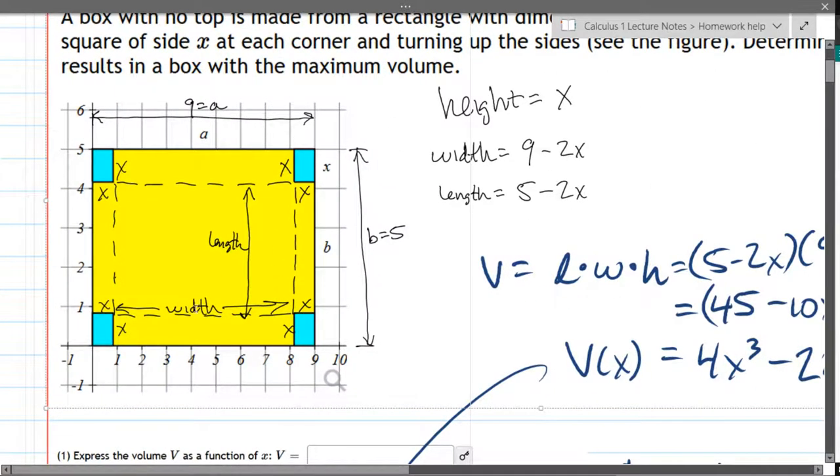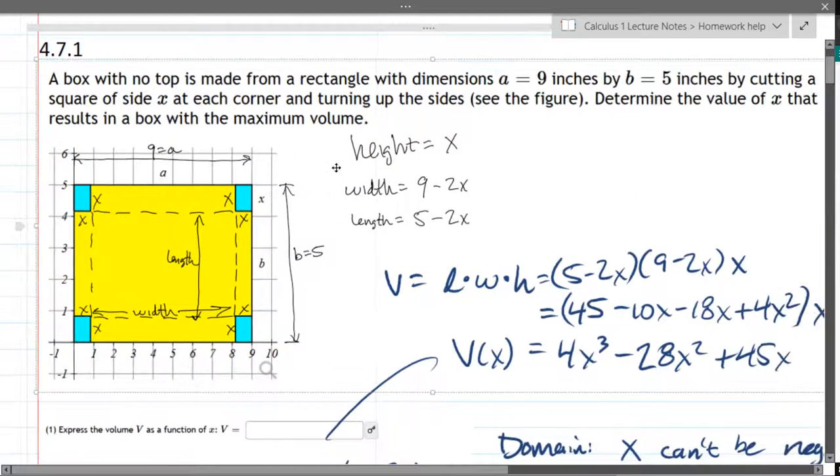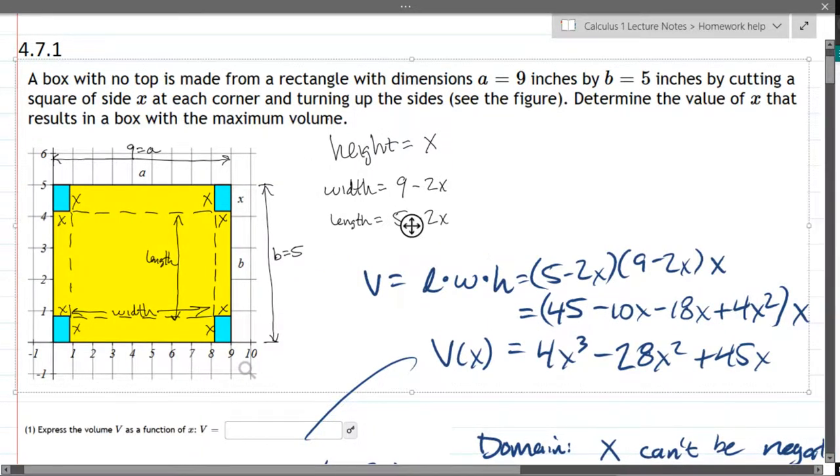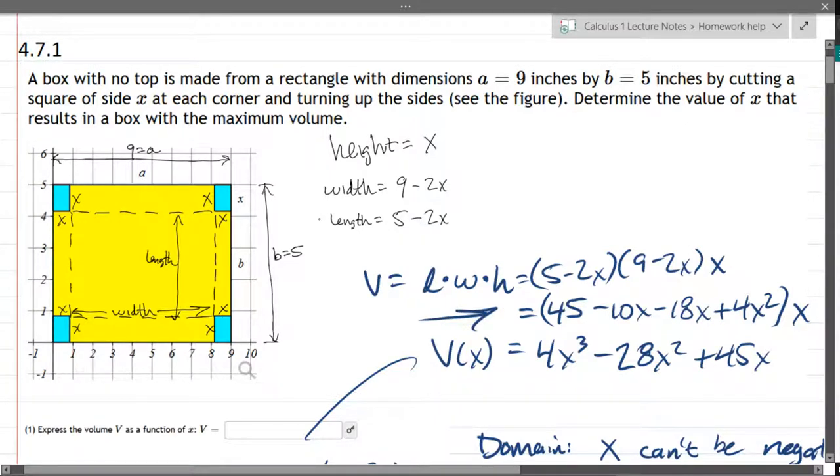And of course the volume of the box is length times width times height. And we see that right here. We just multiply those values together. And then on this next step here, I foiled it all out and then finally distributed. So this right here is our volume. That's what we want to maximize.